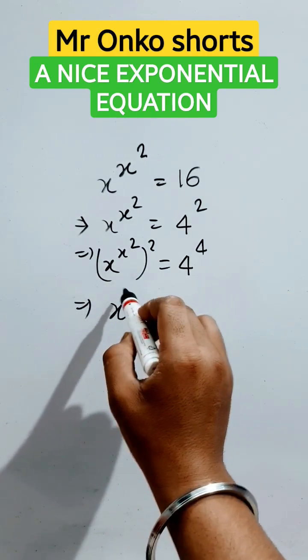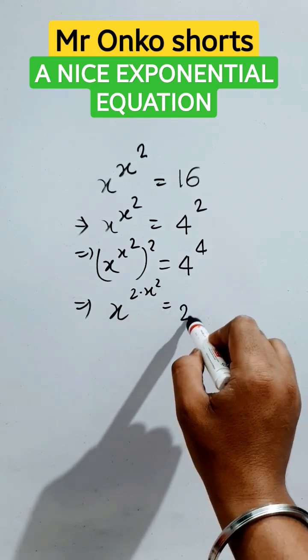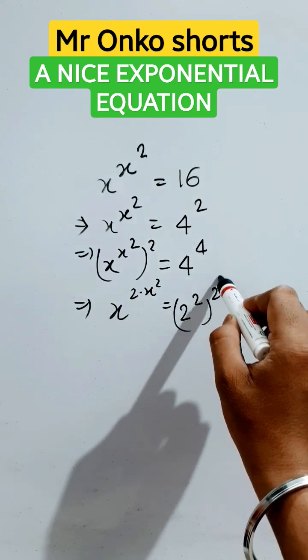Now here this is x raised to the power 2 times x squared. This can be written as 2 squared whole to the power 2 squared.